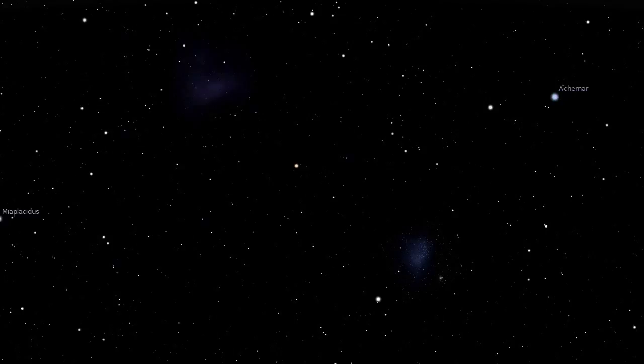Southern observers can see two small satellite galaxies of the Milky Way. We call these the large and small Magellanic clouds.